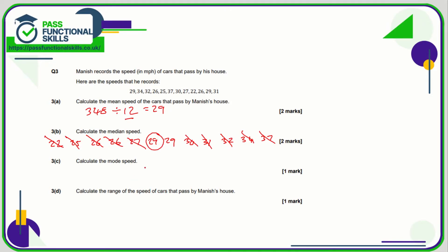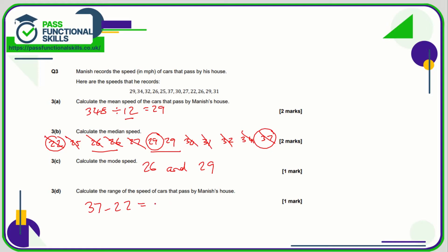The mode — the one that crops up the most: 26 occurs twice and 29 occurs twice. So there are two modes: 26 and 29. And the range is the greatest minus the lowest — 37 take away 22 — so that is a range of 15.